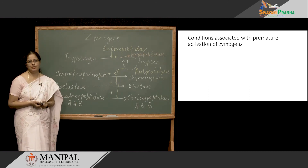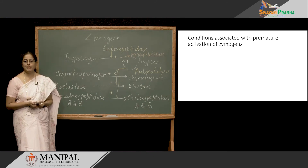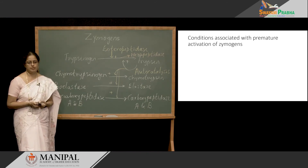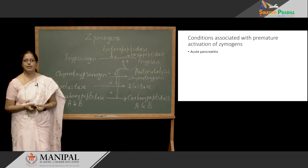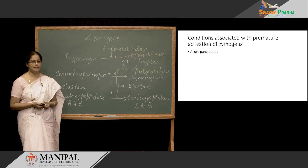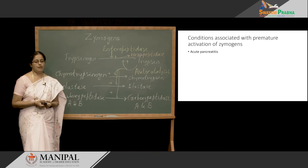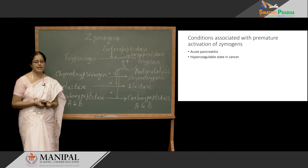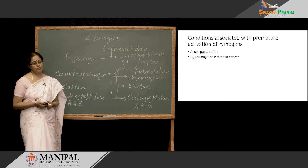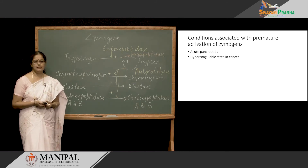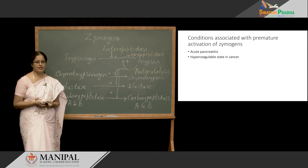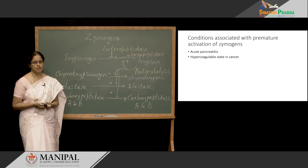Now let us consider conditions associated with premature activation of zymogens. There is a condition called acute pancreatitis where pancreatic zymogens get prematurely activated. And there is a condition called hypercoagulable state associated with different cancers, where clot formation occurs when it is not necessary.